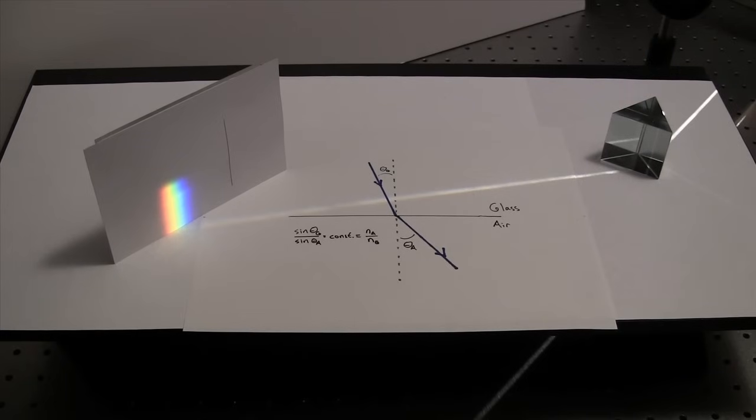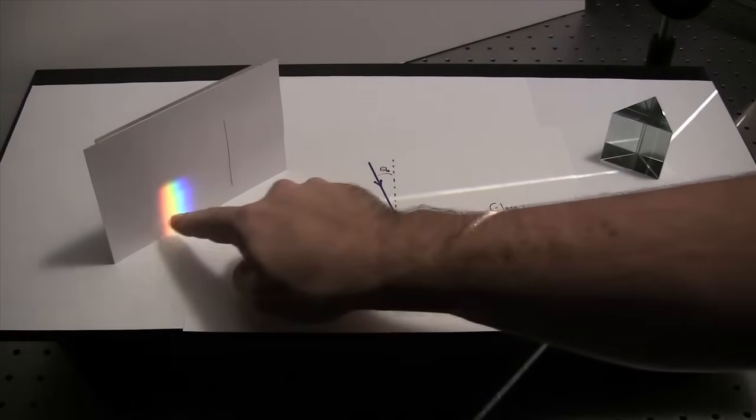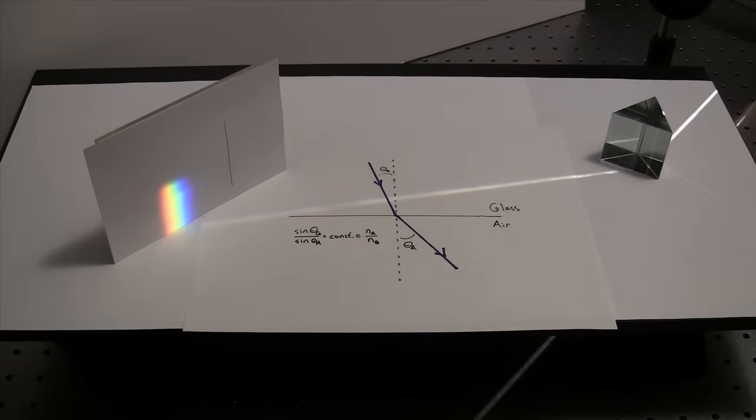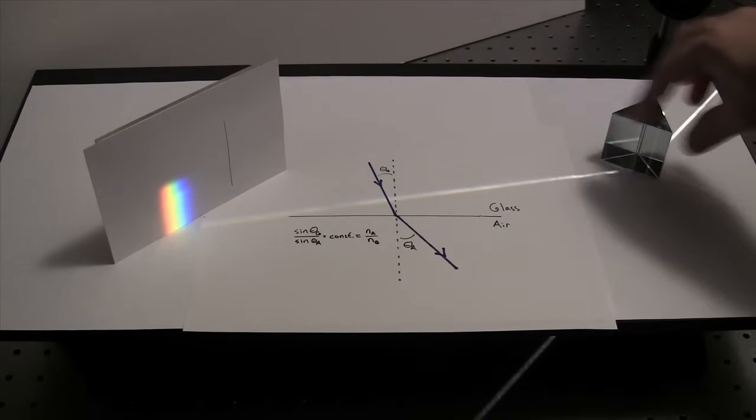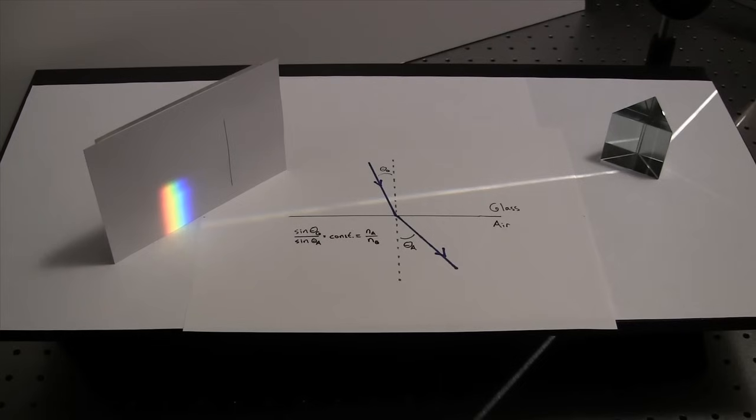So he did some experiments. He separated out individual colors in the spectrum and passed them through additional prisms. And what he came to realize was that all the colors in this spectrum are their own form of light, and they all experience a different refractive index on traveling through these prisms.